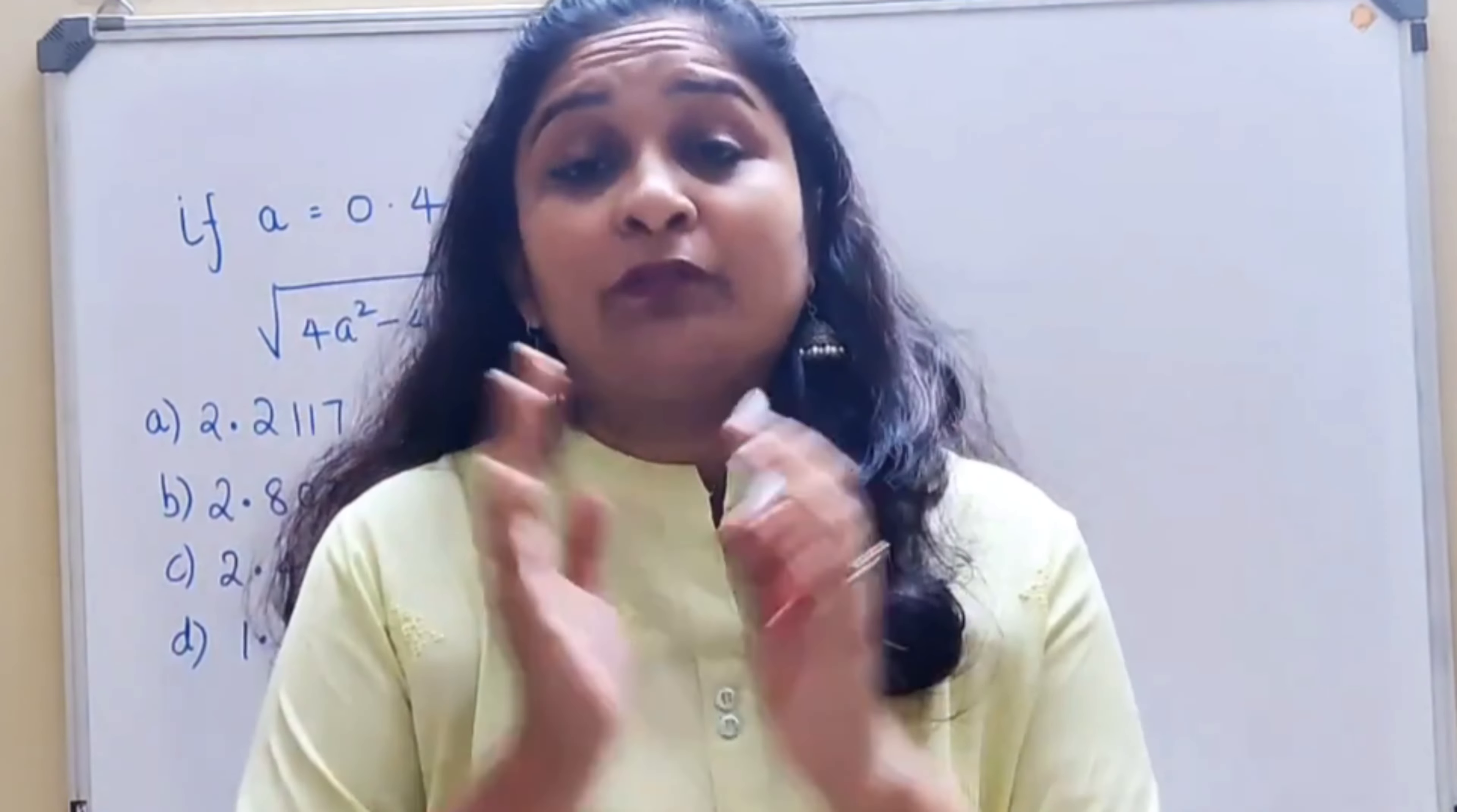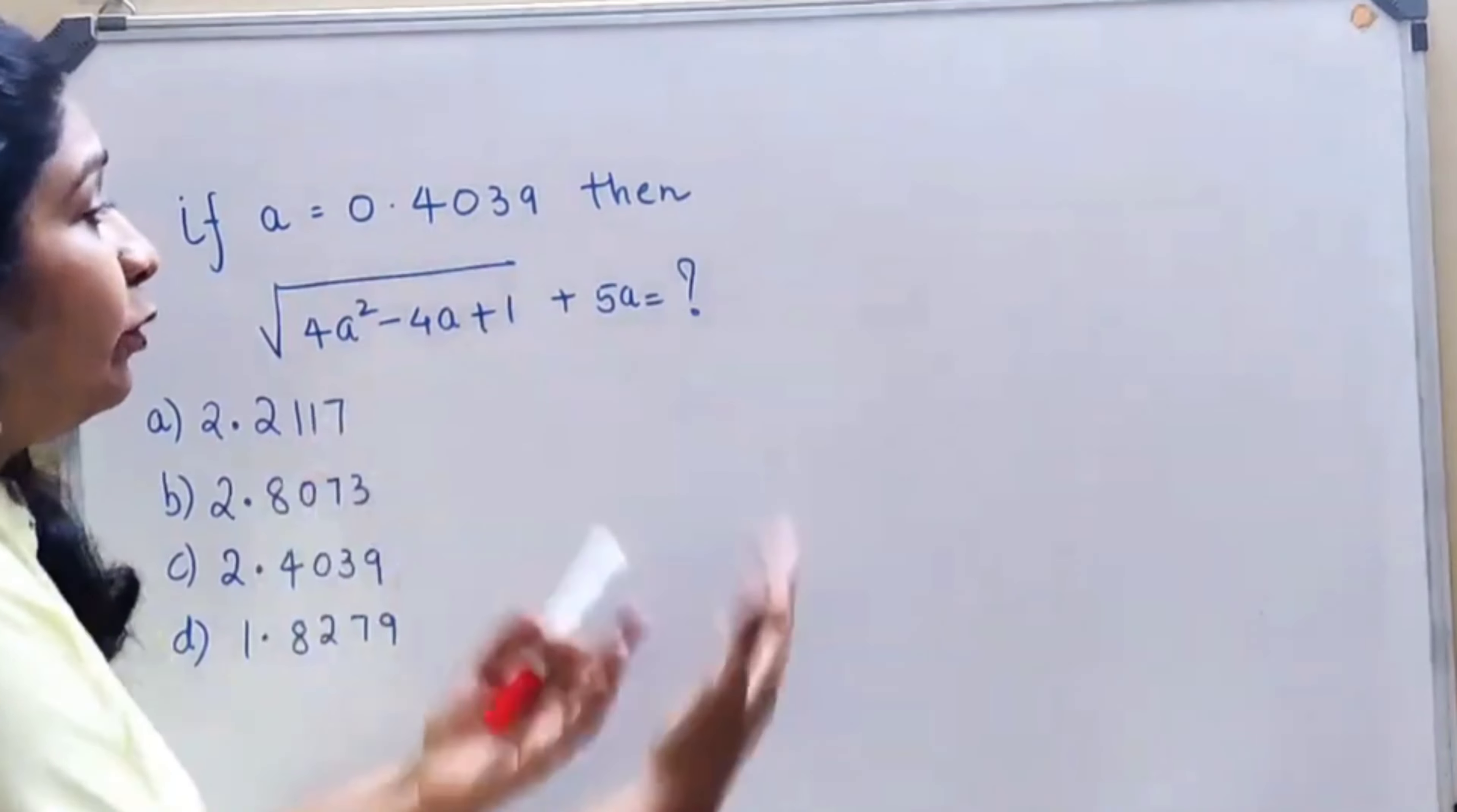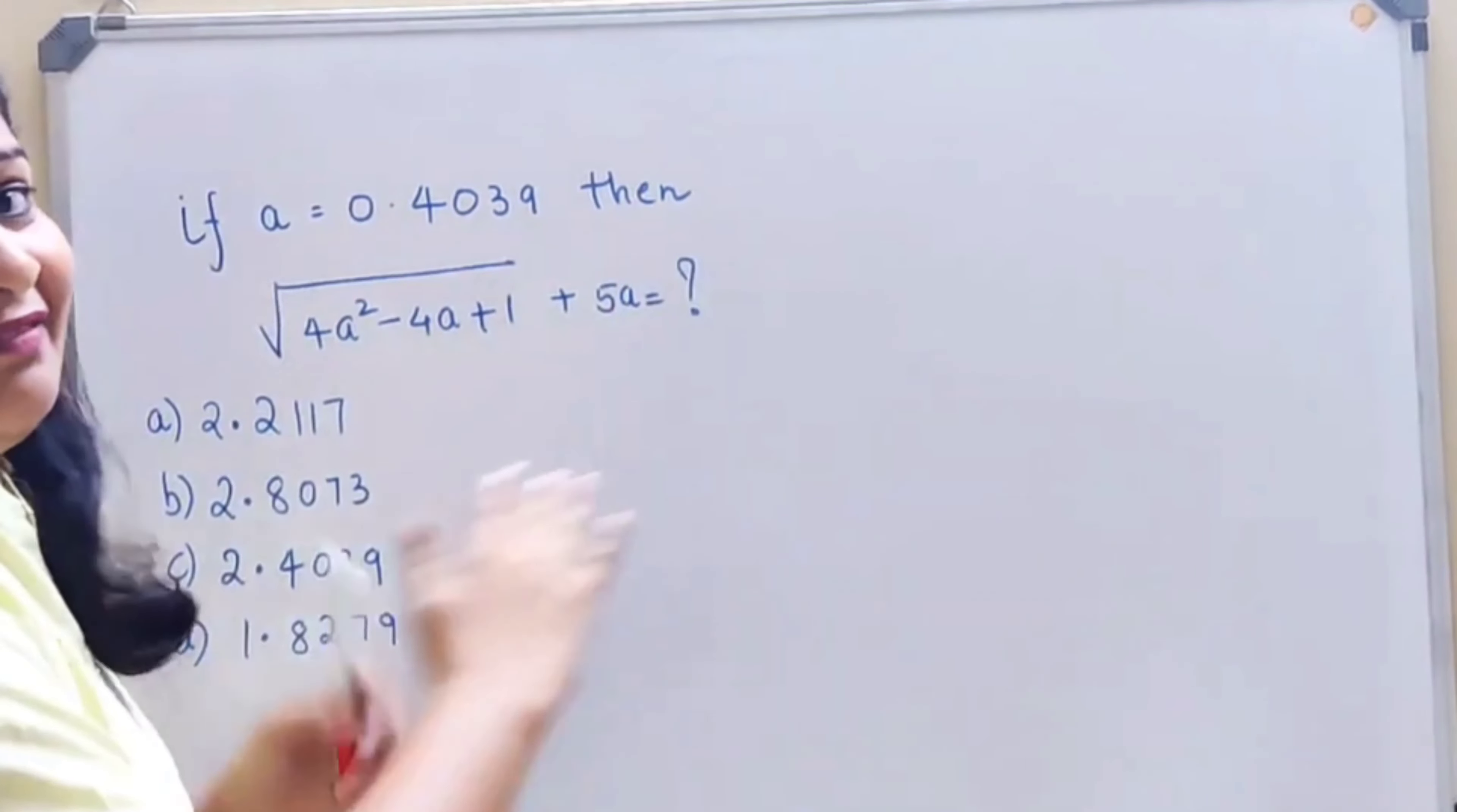Welcome everyone, so today we are going to solve a question which was asked in Intelligence Bureau exam. The question is: if a is equal to 0.4039, what will be the value of the square root of 4a² - 4a + 1, and then there is a +5a ahead of the root.